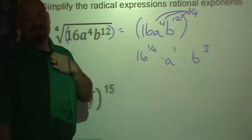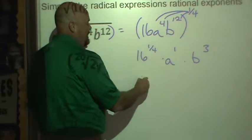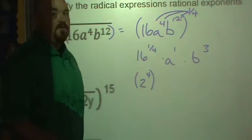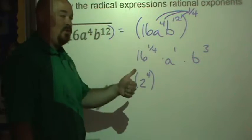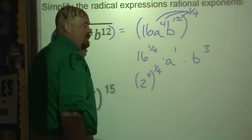Now the 16 to the one-fourth power. 16 just happens to be—that's why I wrote the problem the way I did—just happens to be two to the fourth power. Don't expect you to know all of the fourths, but 16 is two times two times two times two. So we have two to the fourth to the one-fourth power.